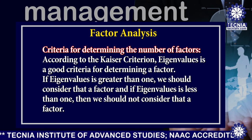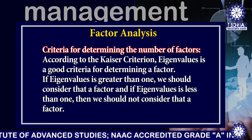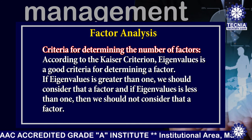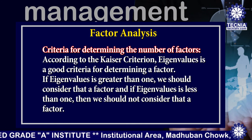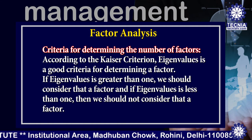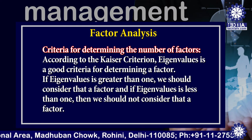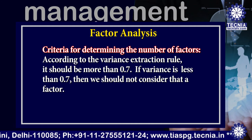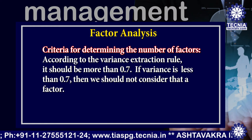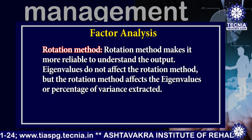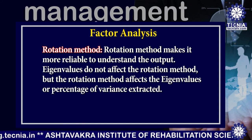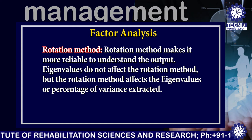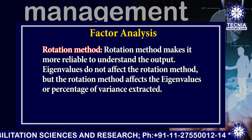How can we determine the number of factors? There are certain criteria. According to the Kaiser criteria, eigenvalue is a good criterion for determining a factor. If eigenvalue is greater than 1, we should consider that a factor. According to the variance extraction rule, it should be more than 0.7; if variance is less than 0.7, we should not consider that a factor. Eigenvalue does not affect the rotation method, but the rotation method affects the eigenvalue or percentage of variance extracted.